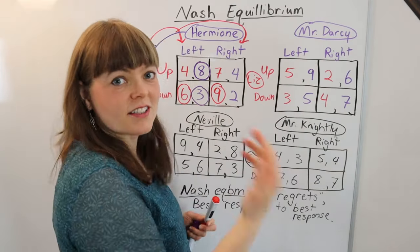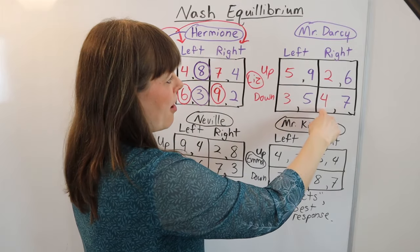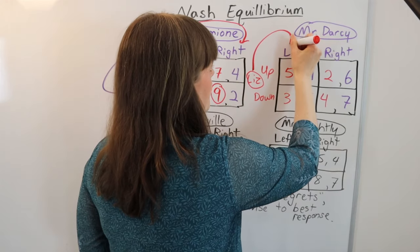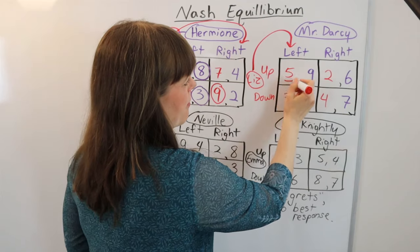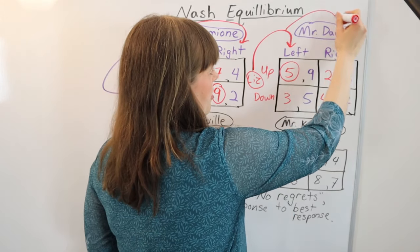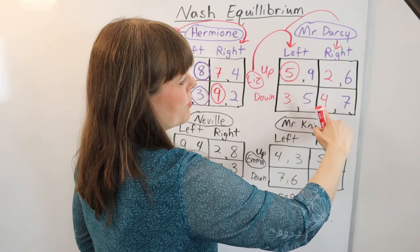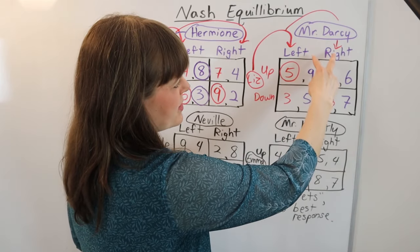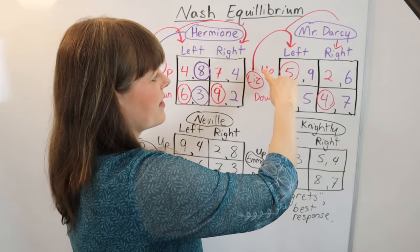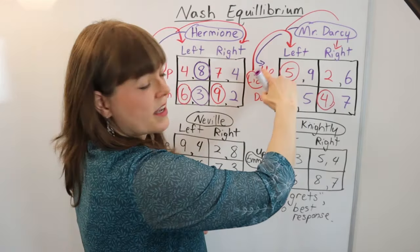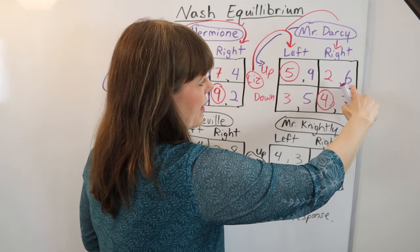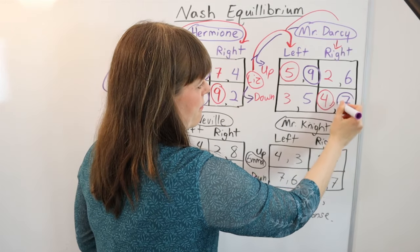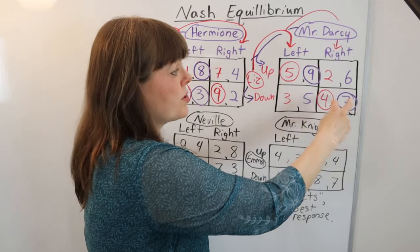Let's do the next game. Starting from Elizabeth's perspective, we look at all Elizabeth's payoffs and check Mr. Darcy's strategies. Elizabeth says if Mr. Darcy went left, she would prefer the five rather than the three. If Mr. Darcy went right, she would prefer the four rather than the two. Then we flip perspectives and think from Mr. Darcy's perspective as player two, yet he checks Elizabeth's strategies. If Elizabeth goes up, he would prefer the nine over the six. If Elizabeth goes down, he would prefer the seven rather than the five. So in this game, we actually have two different Nash equilibria.